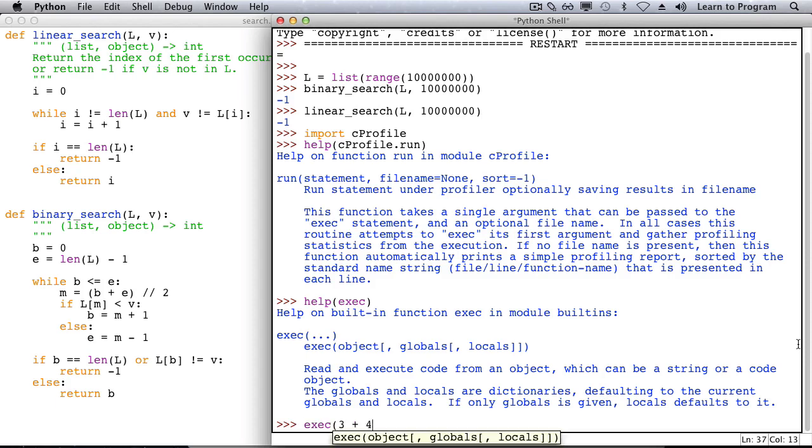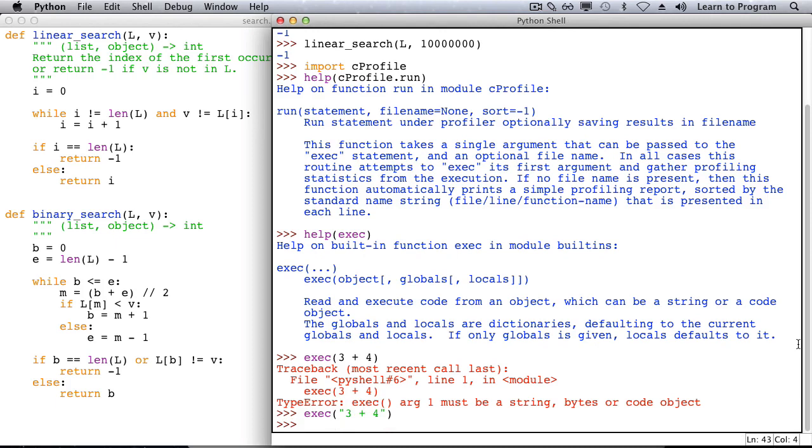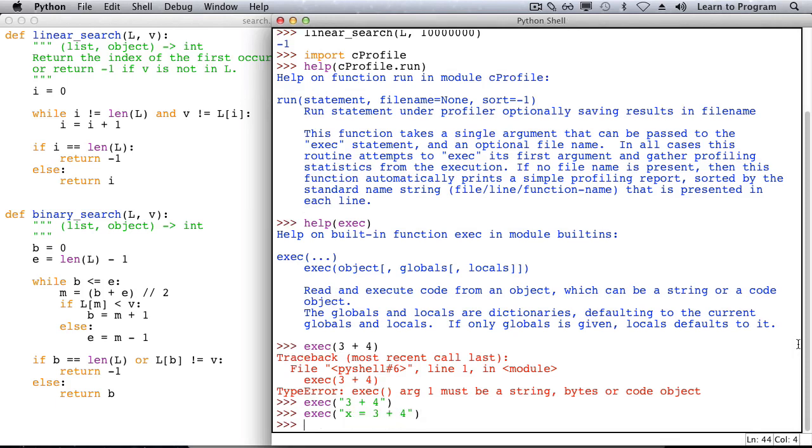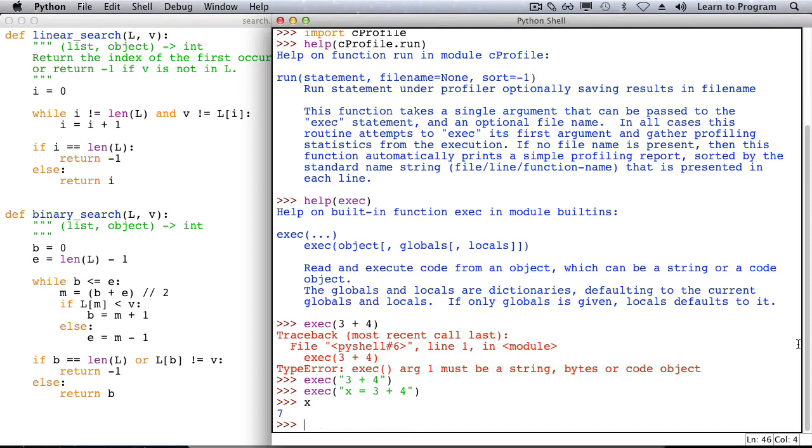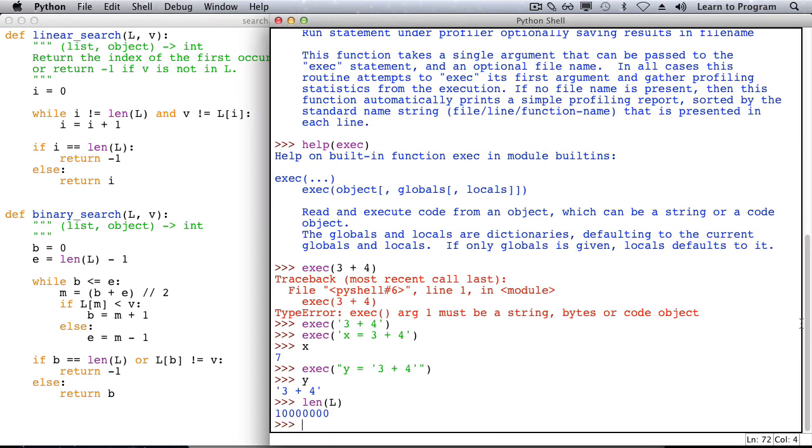If we give it something that isn't a string, we're told that argument one must be a string, bytes, or code object. Okay, let's put 3 plus 4 inside quotes. There's no error, but we still don't know exactly what's going on. Well, run takes a statement. Perhaps exec can take a statement as well, maybe an assignment statement. When we do the function call, indeed variable x is created. Let's try assigning a string to variable y. Remember that L refers to a list with 10 million items in it.